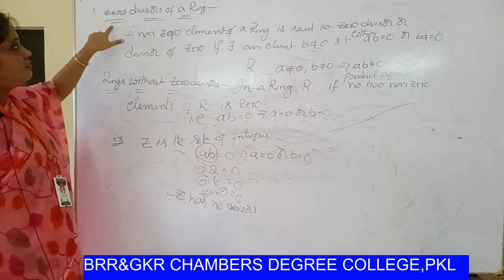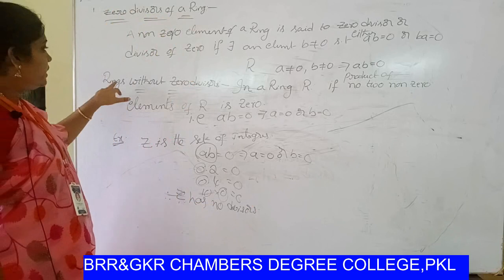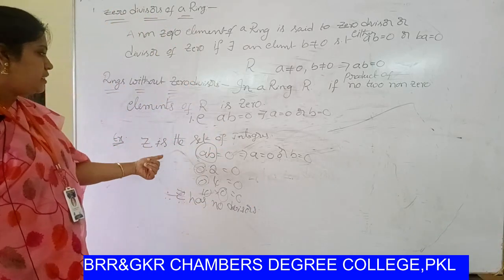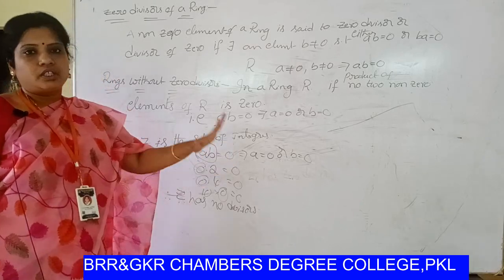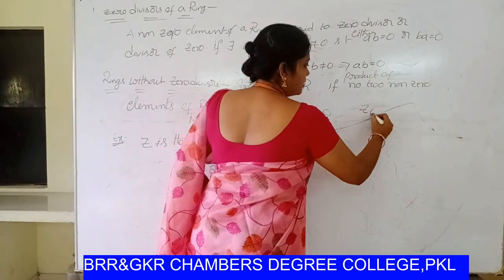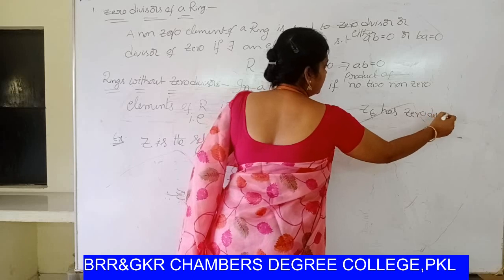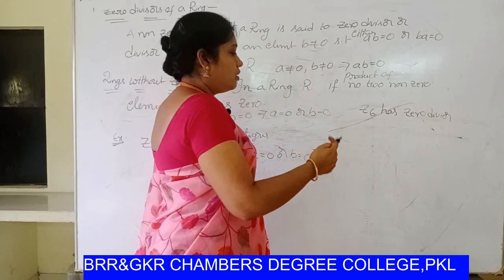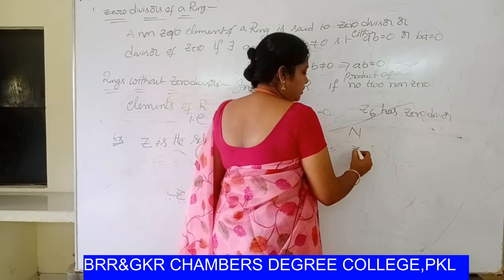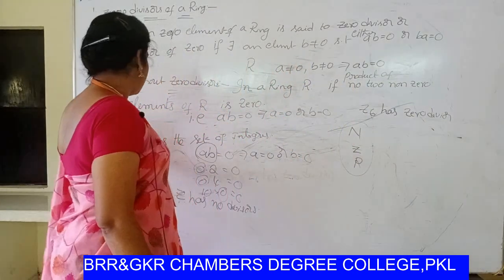So this is the definition for zero divisors of a ring, and this is for rings without zero divisors. Therefore the set of integers has no zero divisors, but Z6 has zero divisors. We know that the number systems — natural numbers, real numbers, integers — these are all rings that have no zero divisors.